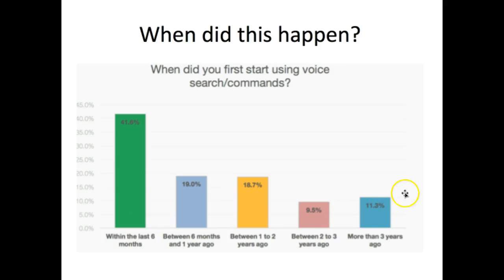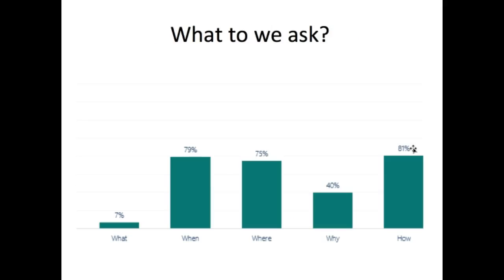A few were early adopters before that. We're now finding voice search in devices and appliances — turning our lights on and off at home. We've got Apple CarPlay and Google Automotive with Android in our cars, so you can talk and manage things hands-free. This is a really up-and-coming thing.